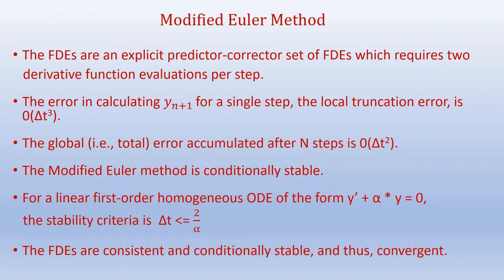To summarize the finite difference equations in the modified Euler method: it is an explicit predictor-corrector set of equations which requires two derivative function evaluations per step. The local truncation error for a single step is of the order Δt³. The global error — the total error accumulated after n steps — is of the order Δt². In the previous explicit and implicit Euler methods, the error was of the order Δt.